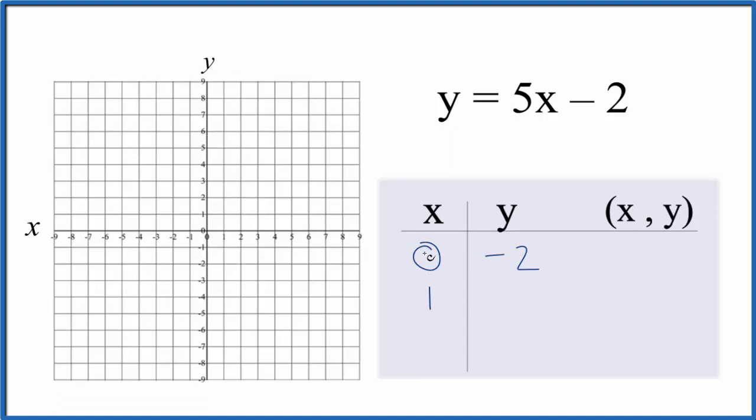How about we put negative 1 in? 5 times negative 1, that's negative 5, plus a negative 2 is negative 7. So these are the points that we'll graph for the linear equation y equals 5x minus 2.